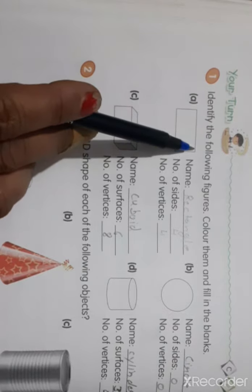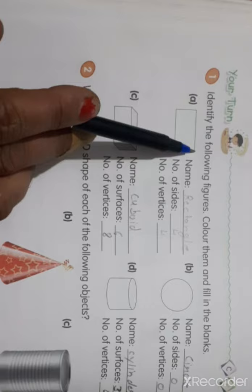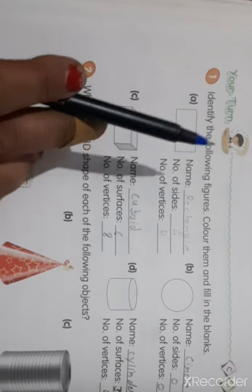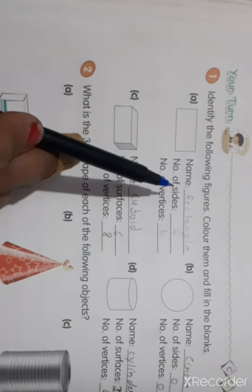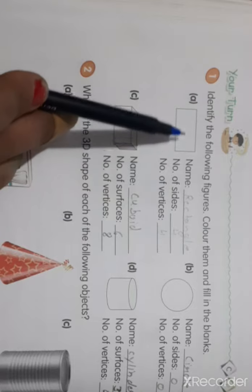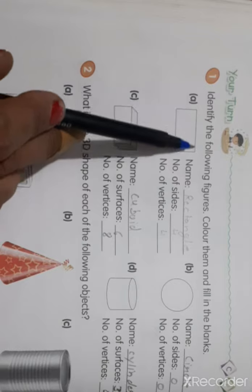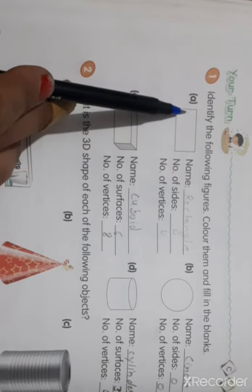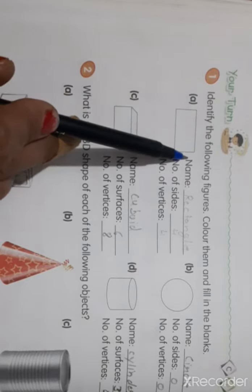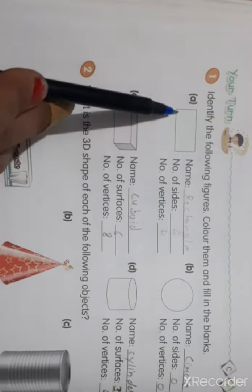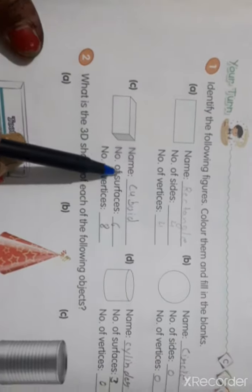And when two lines meet at one point, what do we call it? Vertex or corner. You learned corner in third class, so now it is called the corner or vertex. And it has 1, 2, 3 and 4 sides and 1, 2, 3, 4 vertices.